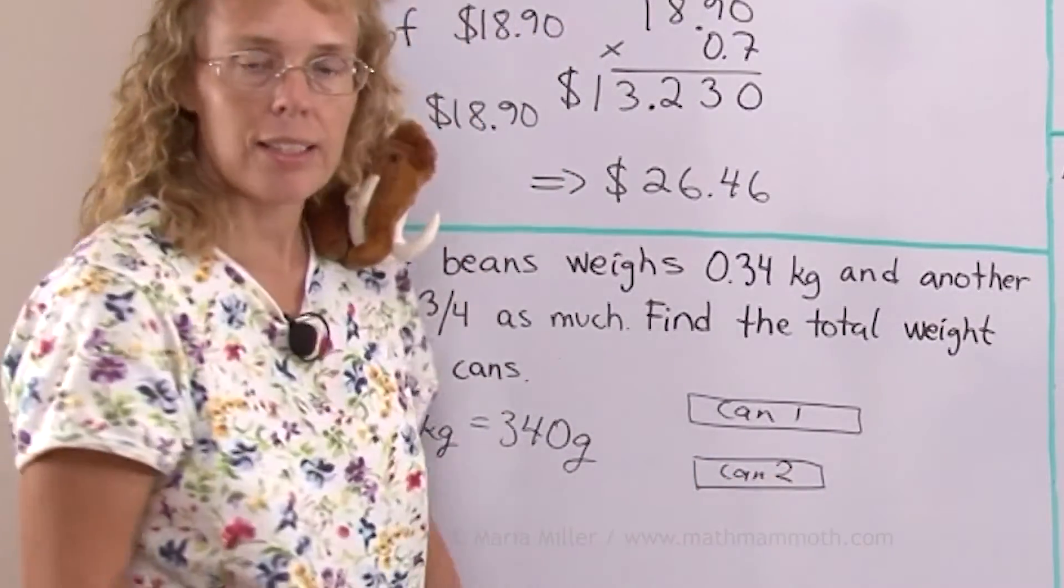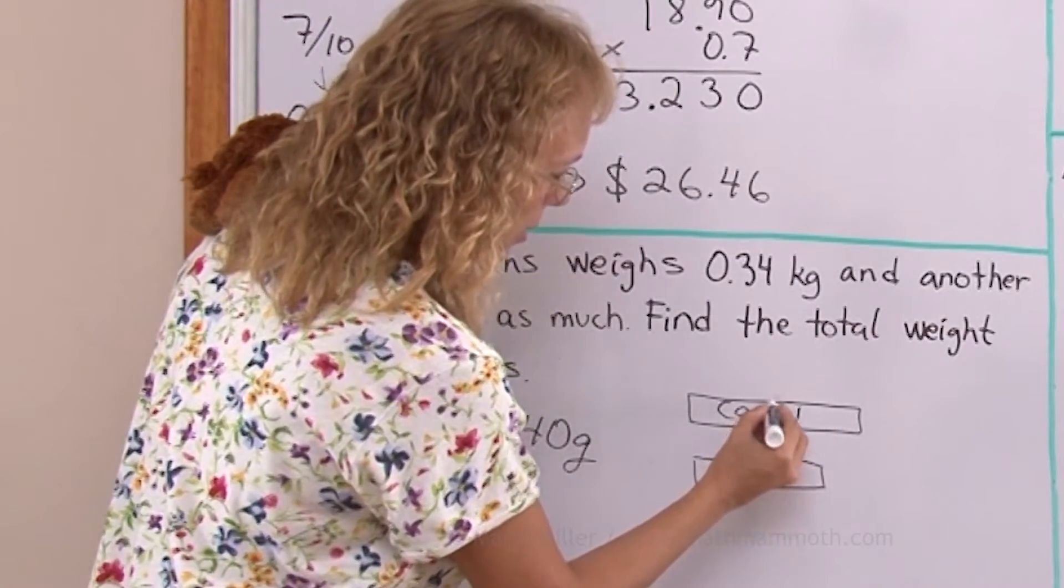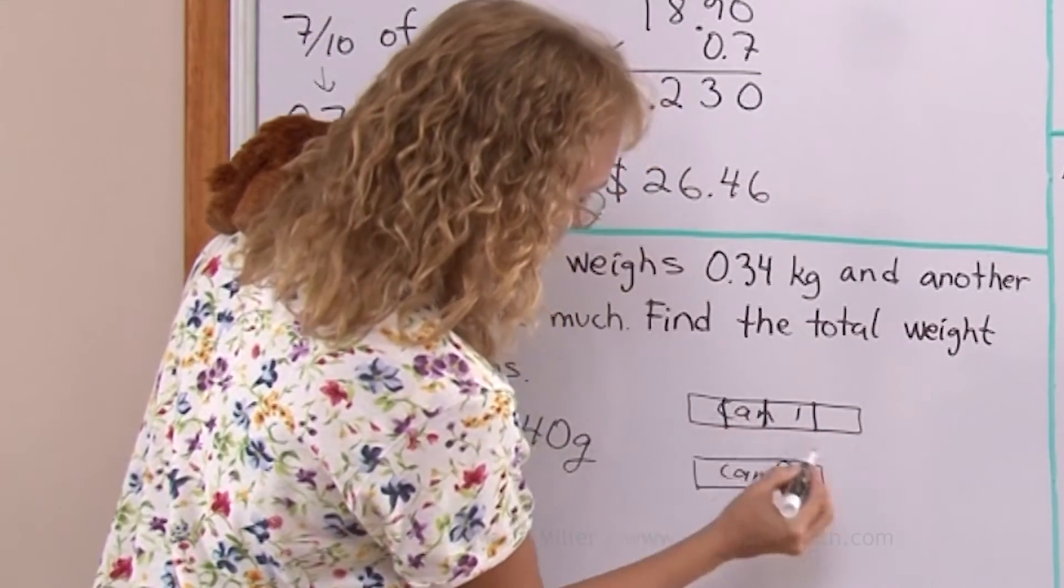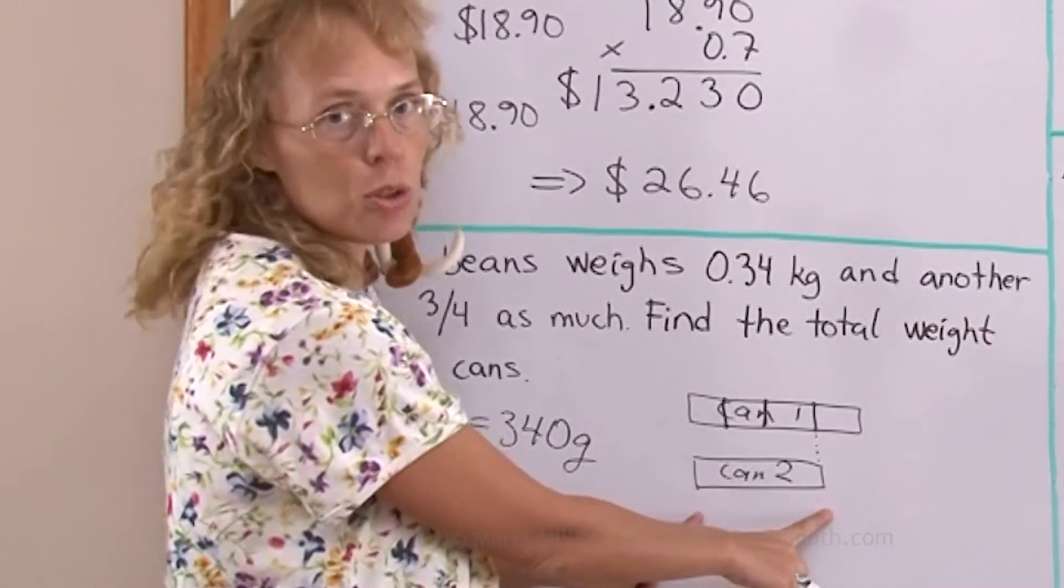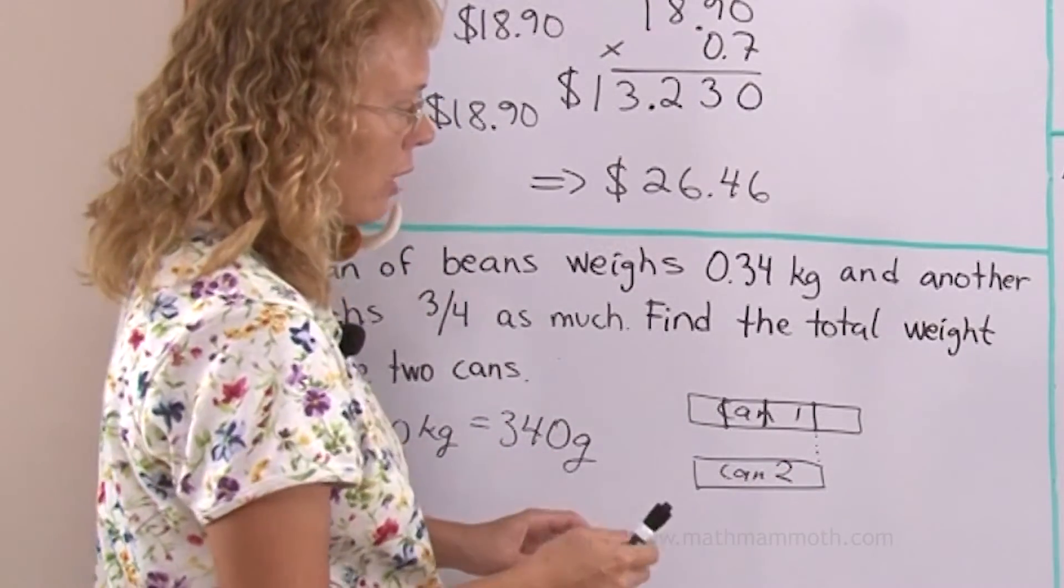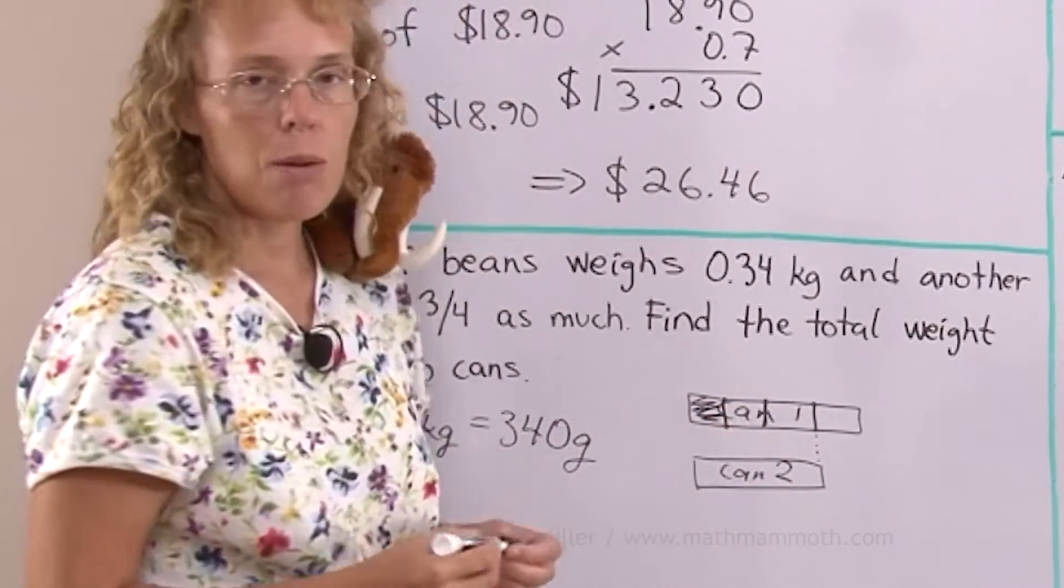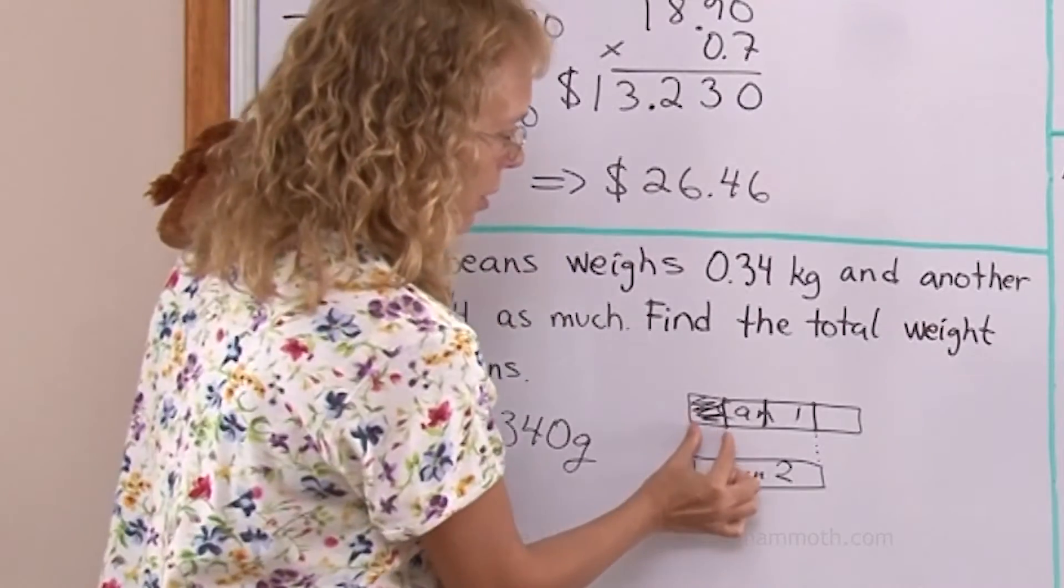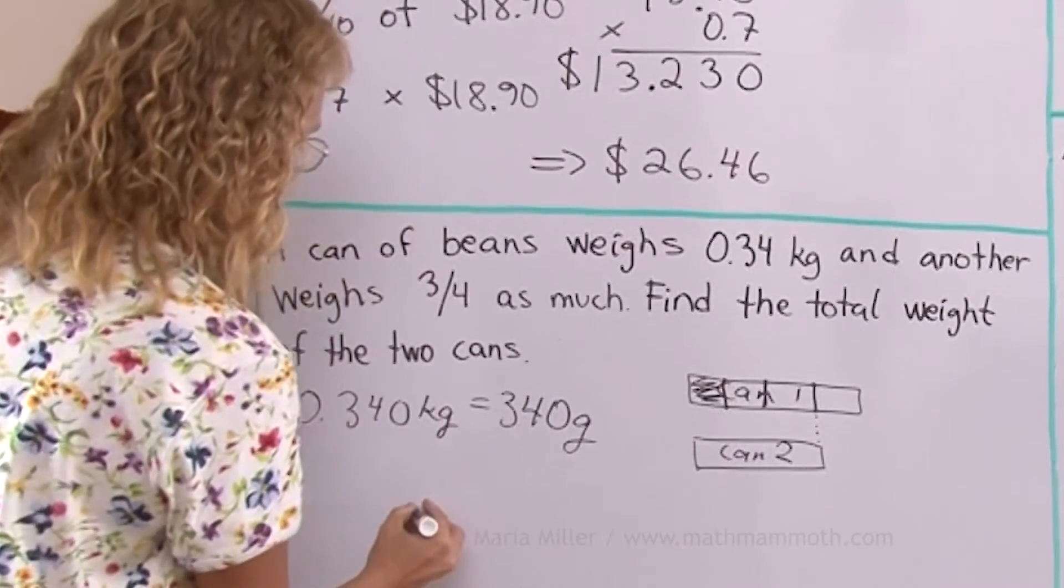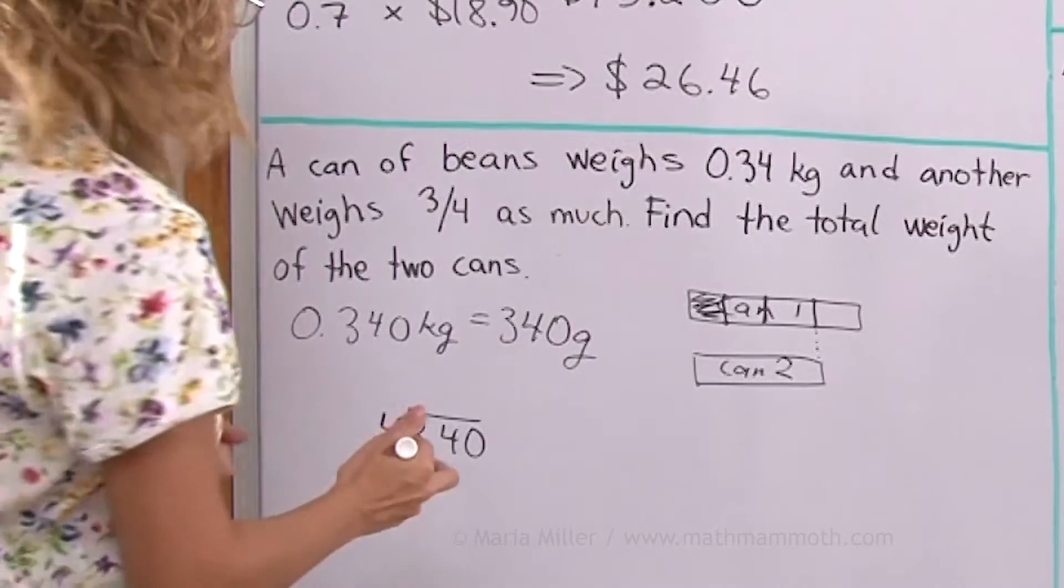How much does it weigh? How do we calculate it? If I divide can 1 into 4 parts, then this can 2 is three-fourths of it. And to calculate it I will first find one-fourth, this here. I'll find how much is one-fourth of the can 1 and multiply that times 3 to get this one. So I'll take 340 grams divided by 4 to find one-fourth of its weight.